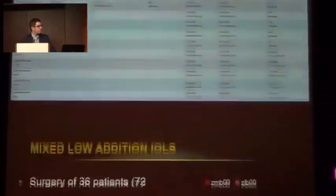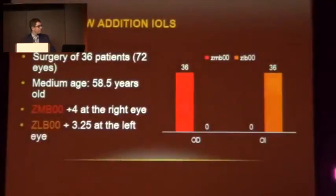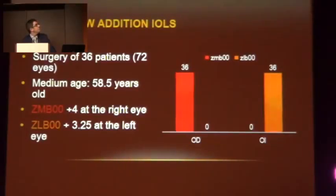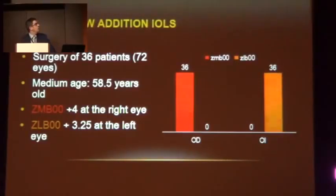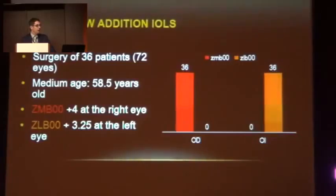This is my study and these are the results of the surgery. I performed surgery on 36 patients, 72 eyes, with a mean age of 58.5 years old. I always implanted the ZB plus 4 in the right eye and the ZB plus 3.25 in the left eye.